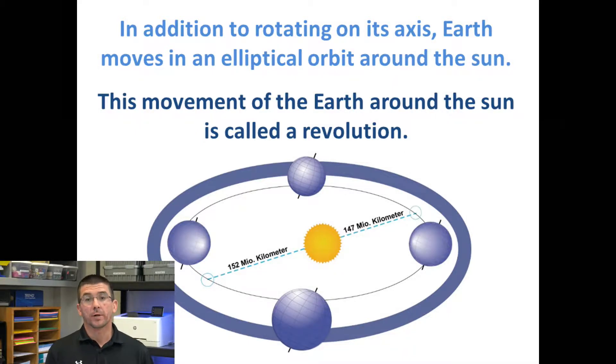In addition to rotating on its axis, Earth also moves in an orbit around the Sun, meaning it just travels in a circle around the Sun, and we call this motion revolving, where one time around the Sun would be equal to one revolution.